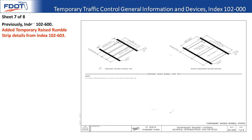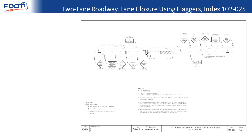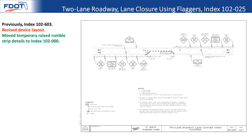Sheet seven of eight shows the temporary raised rumble strips. These details were moved from index 102-603 into 102-000. Moving on to the two-lane roadway lane closure using flaggers, index 102-025 — previously index 102-603 — the device layout has changed slightly so pay attention to that. The usage criteria for the temporary raised rumble strips moved to FDM 240.2.2.2.13.